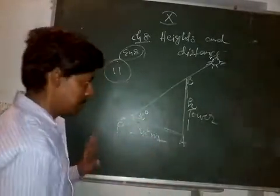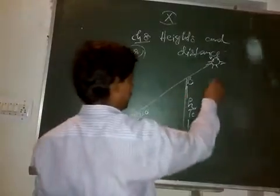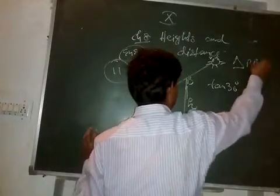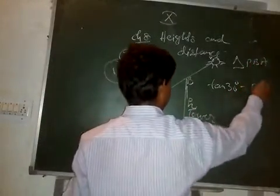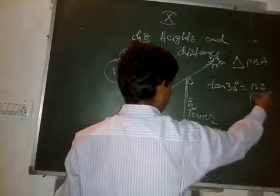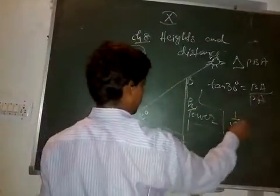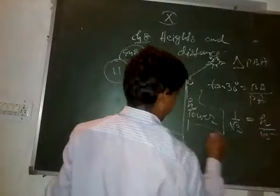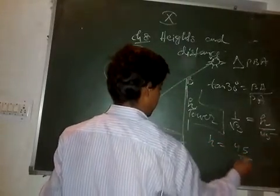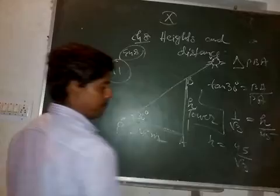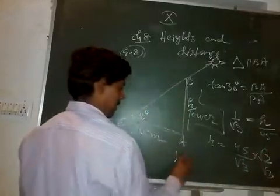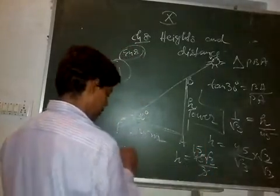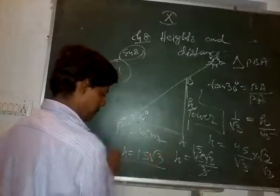In triangle P-B-A, tan 30° = B-A upon P-A, which is H upon 45. Since tan 30° = 1/√3, we get 1/√3 = H/45, so H = 45/√3. Rationalizing by multiplying numerator and denominator by √3 gives H = 45√3/3 = 15√3 meters. The height of the tower is 15√3 meters. So read the question, draw a proper diagram, then apply simple trigonometry.